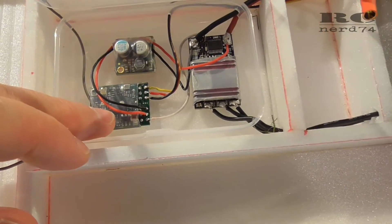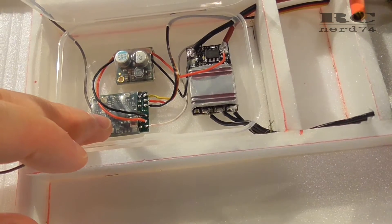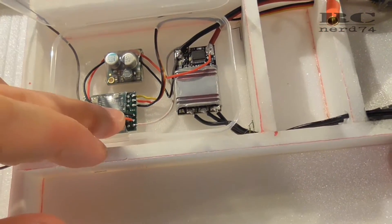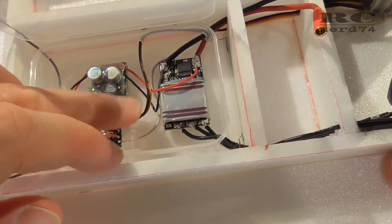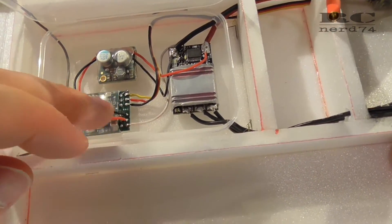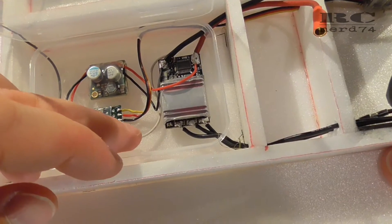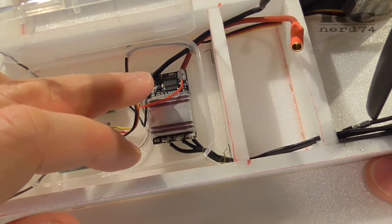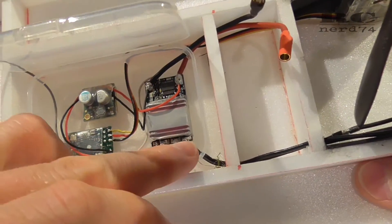With these 5 volts I can power the Futaba fast receiver and then we have as already mentioned servo with power and signal.